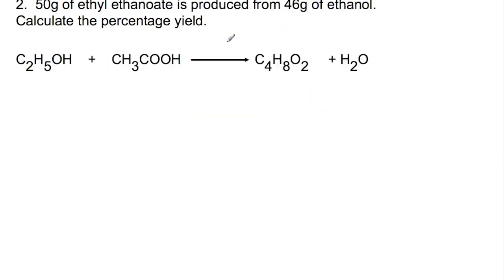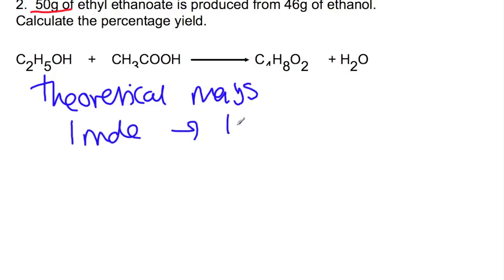In the second example, we have 50 grams of ethyl ethanoate as the actual mass produced, and now we need to look at the theoretical mass. So 1 mole of ethanol would produce 1 mole of ethyl ethanoate. So that is 46 grams, which would give you 88 grams. In this reaction, we are already using a whole mole of ethanol, so 46 grams. So that means that your theoretical mass is 88 grams.